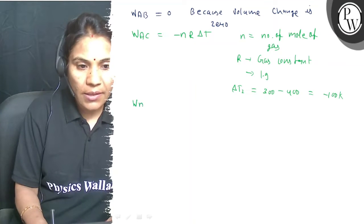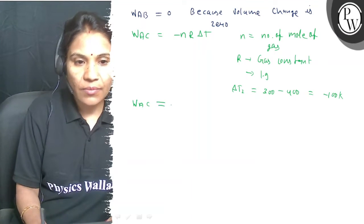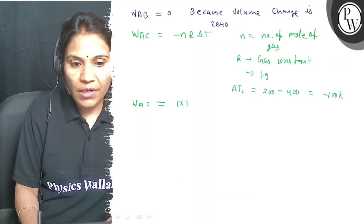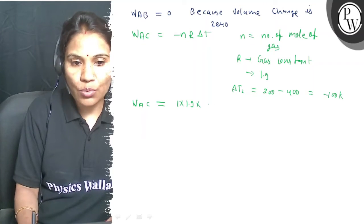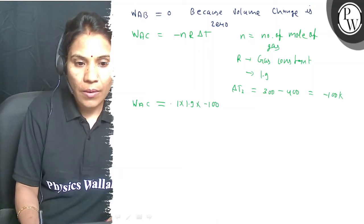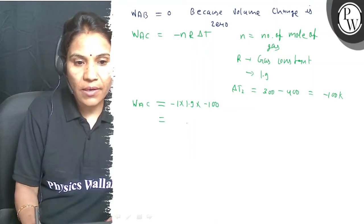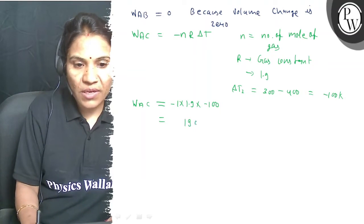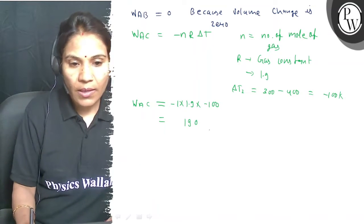So W AC will be 1 into 1.9 into minus 100, so this value is 190 calories.